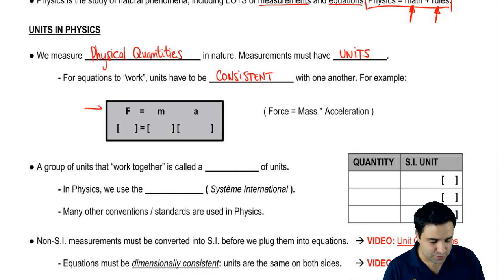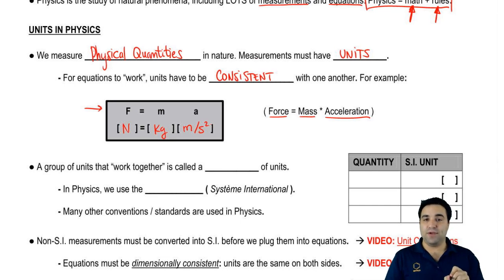So for example, here's an equation: F = ma. This is probably the most important equation in all of physics one, and it means that force equals mass times acceleration. Force is measured in newtons, mass is measured in kilograms, and acceleration is measured in meters per second squared. But this equation only works if you have these three measurements in those units. If you plug in a mass in grams and an acceleration in meters per second squared, you don't get a newton. You get something else. This equation breaks. So units have to work together. They have to be consistent.